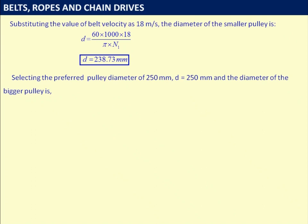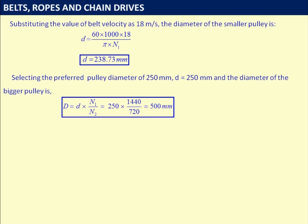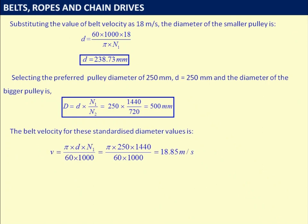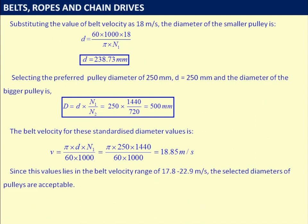The diameter of the bigger pulley is D = d × N1/N2 = 250 × 1440/720 = 500 mm. The belt velocity for standardised diameters is V = π × 250 × 1440 / (60×1000) = 18.85 meters per second. Since this value lies in the range 17.8 to 22.9 meters per second, the selected pulley diameters are acceptable.